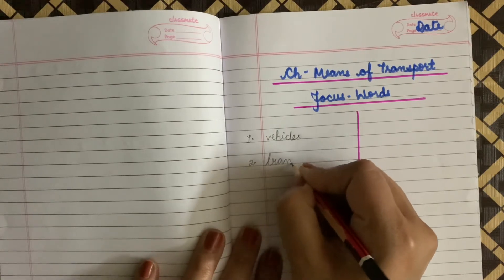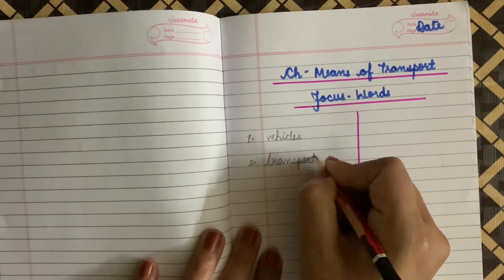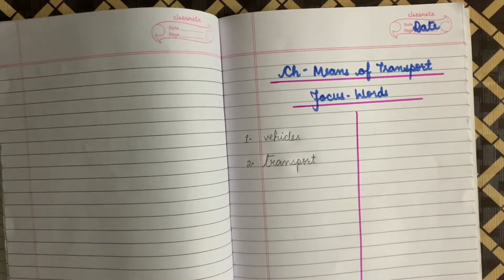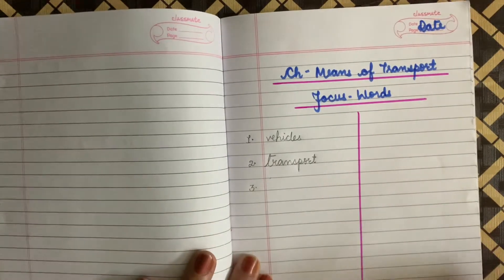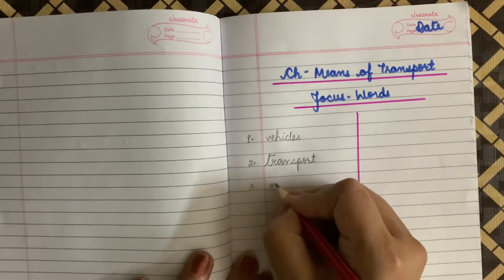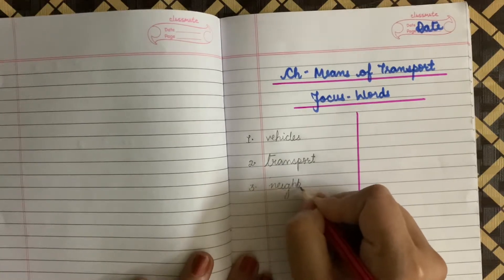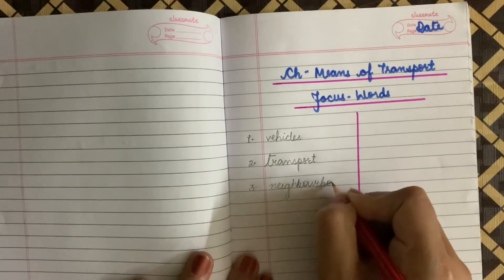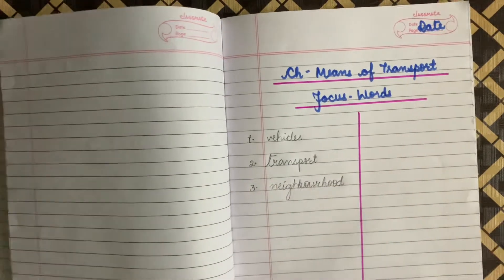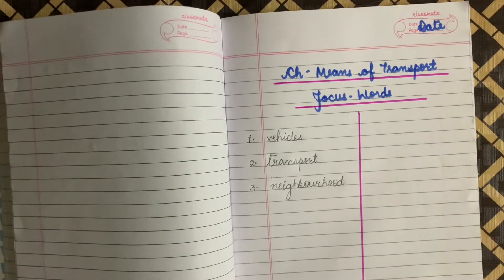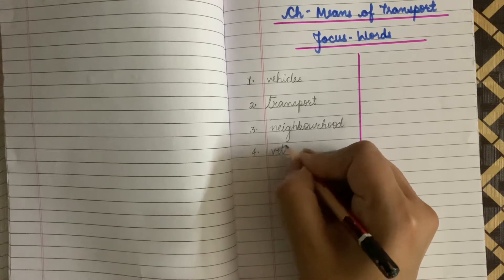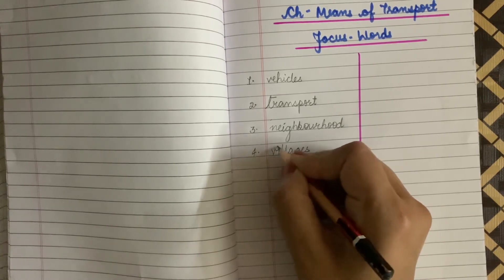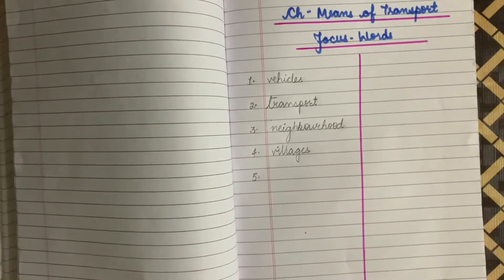The second word is Transport. T-R-A-N-S-P-O-R-T, Transport. Third word is Neighbourhood. Write along with me. N-E-I-G-H-B-O-U-R-H-O-O-D, Neighbourhood. Write down the fourth word: Villages. V-I-L-L-A-G-E-S, Villages.